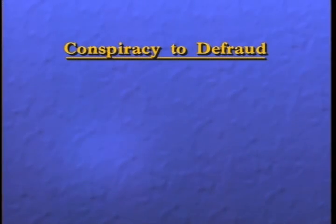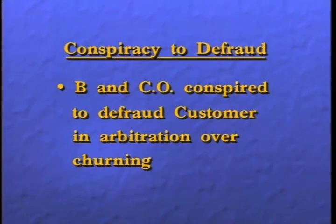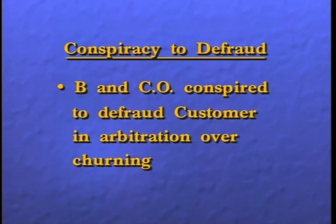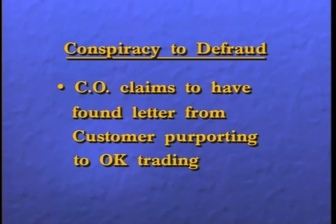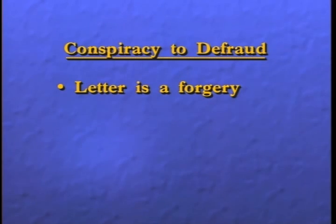As you can see, the charge is that broker, referred to as B, and compliance official, the CO, conspired to defraud a brokerage customer during an arbitration over alleged churning. The compliance official is alleged to have falsely claimed to have located a letter from the customer purporting to acknowledge the trading. The letter is a forgery.